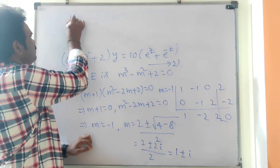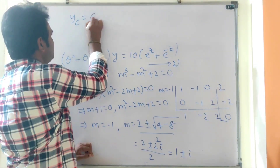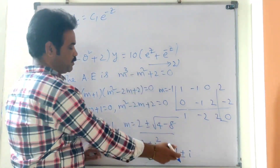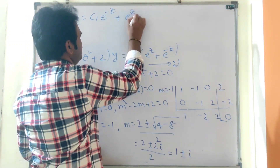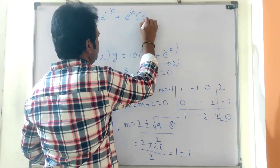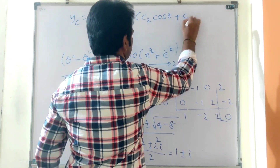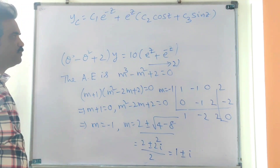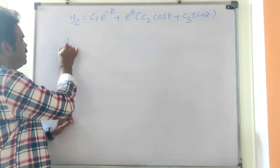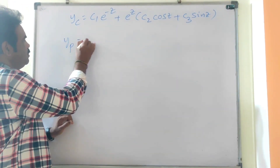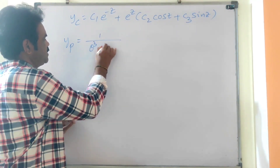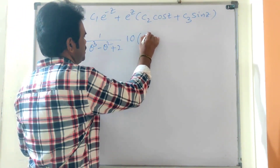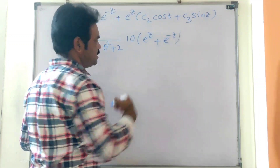Therefore yc = c1·e^(−z) + e^z·(c2·cos z + c3·sin z). This is yc. Next we find the particular integral yp. yp = 1/(θ³ − θ² + 2) · 10·(e^z + e^(−z)).